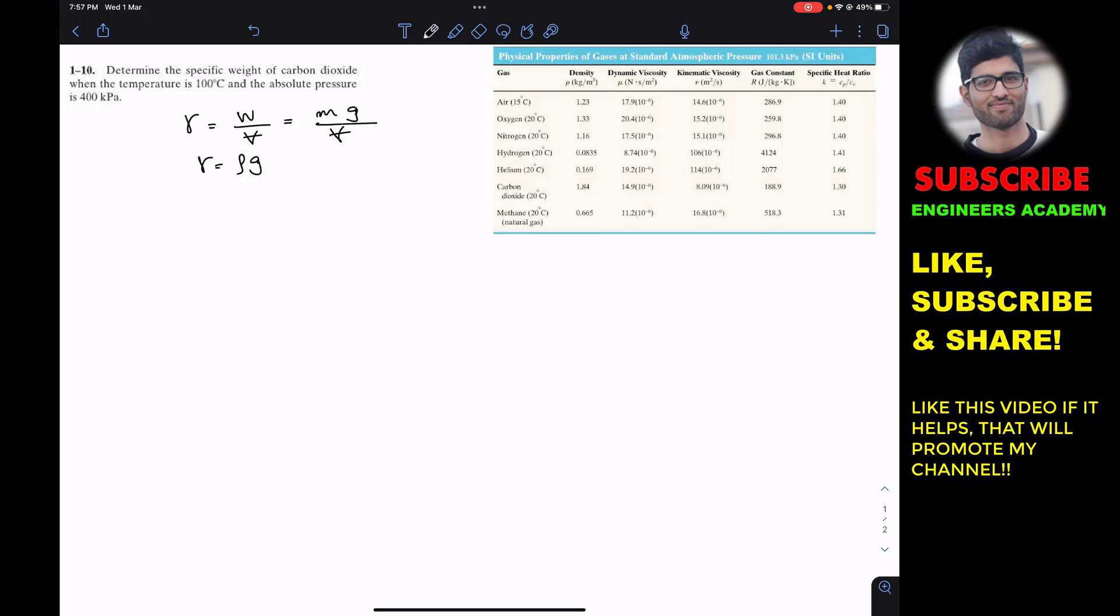Similarly, we know that the ideal gas equation is PV equals MRT. Then we can say that the pressure is equal to mass divided by volume times R times T. This mass per unit volume is again density, so P equals density times R times T.